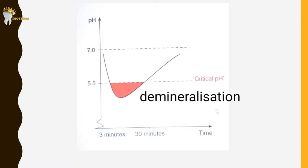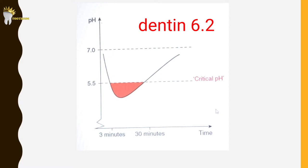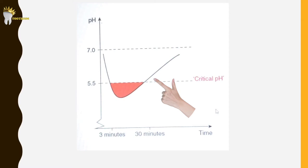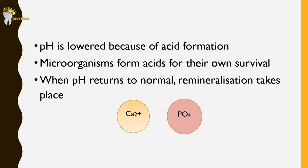The critical pH is 5.5 because below this, demineralization of enamel occurs. For dentin, the critical pH is 6.2, meaning when pH falls below 6.2, dentin will start demineralizing. The pH reaches its minimum in 5 to 10 minutes, followed by a gradual increase back to its starting value over 30 to 60 minutes. Interestingly, microorganisms don't produce acids to demineralize teeth — they do it for their own survival, because excess sugar can kill them. To survive, they metabolize carbohydrates as rapidly as possible, producing large quantities of acid very rapidly.